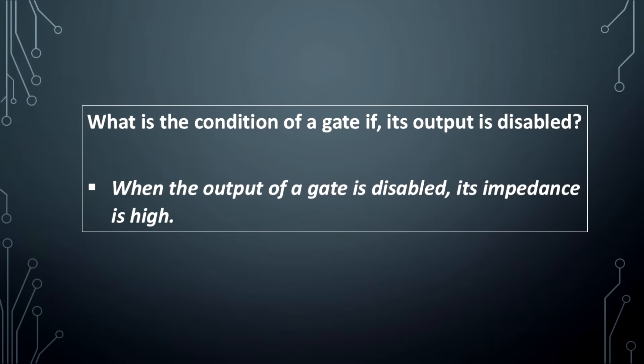What is the condition of a gate if its output is disabled? When the output of a gate is disabled, its impedance is high.